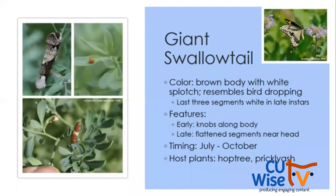Our last swallowtail is the giant swallowtail — another bird dropping mimic. The early instar has a brown body, one white splotch on the back, and branched spines. The later instar is more mottled brown with two white splotches, flattened segments near the head, and has lost the branched spines. July through October, you can find these caterpillars on hop tree and prickly ash. In the southeastern U.S. they can be a serious pest to citrus farmers, where this caterpillar is called the orange dog.